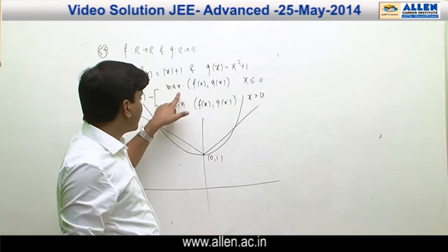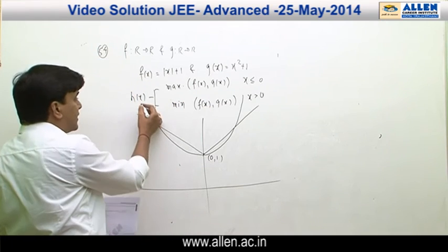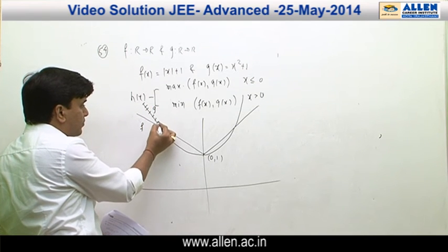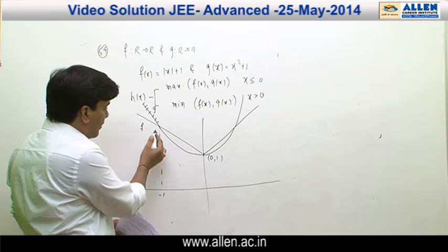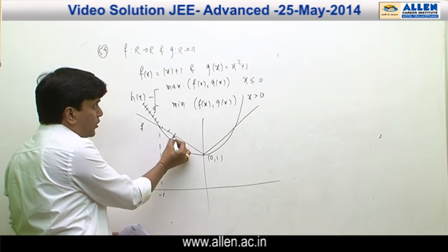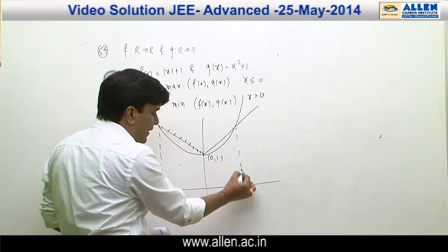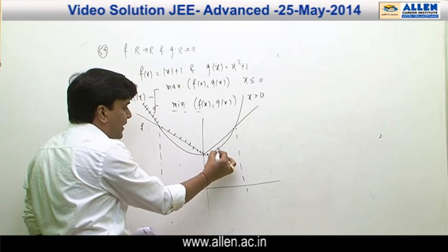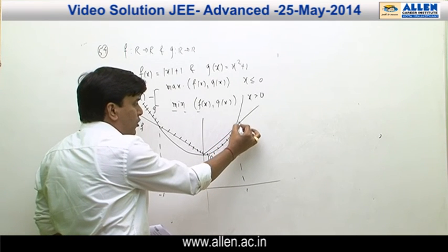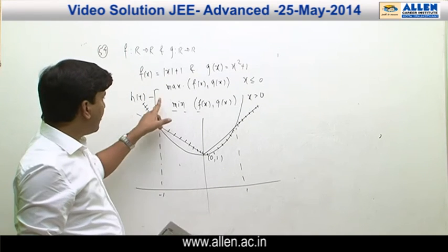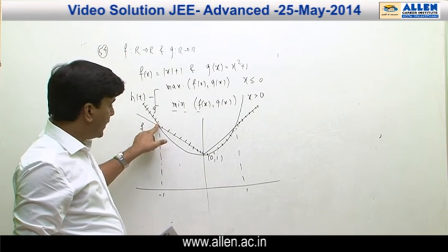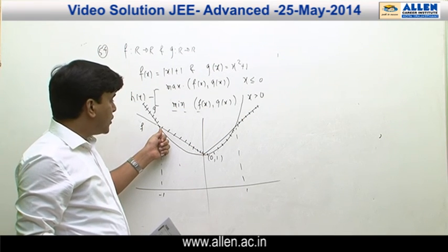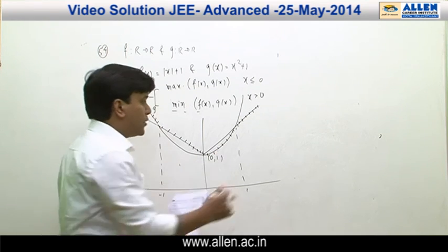For x ≤ 0, we select the maximum of f(x) and g(x). The intersection point is at x = -1. From -∞ to -1, the maximum is g(x); from -1 to 0, the maximum is f(x). For x > 0, we take the minimum: from 0 to 1 it is g(x) = x²+1, and beyond that it is f(x) = |x+1|. The function h(x) is non-differentiable at three points: x = -1, 0, and 1. So the correct answer is 3.